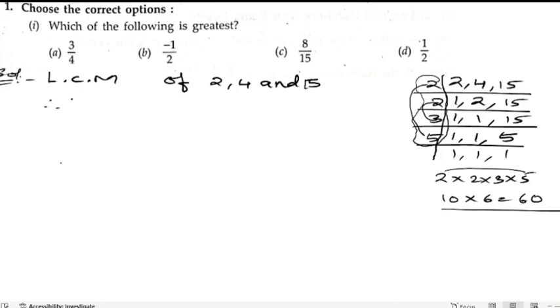Therefore, LCM of 2, 4, and 15 is 60. So now we need to make their equivalent fractions. To make their equivalent fractions, we need to multiply with some number so that the denominator should be equal.